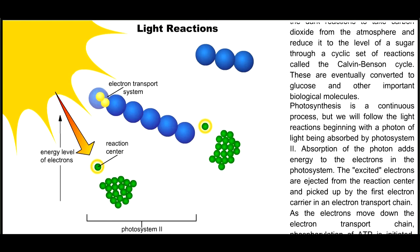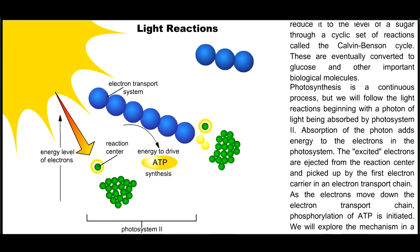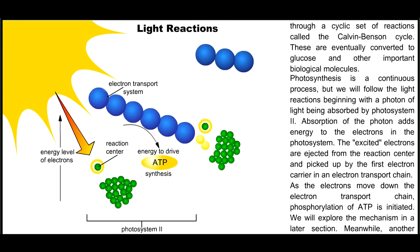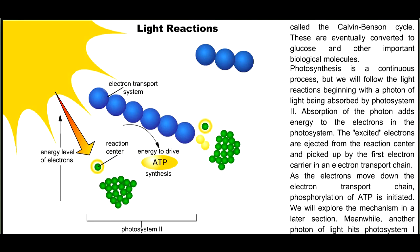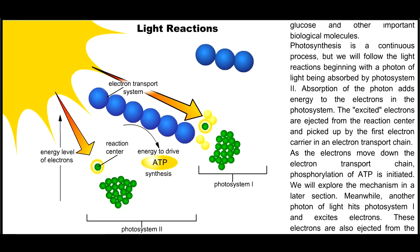As the electrons move down the electron transport chain, phosphorylation of ATP is initiated. We will explore the mechanism in a later section. Meanwhile, another photon of light hits photosystem I and excites electrons.